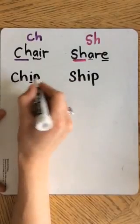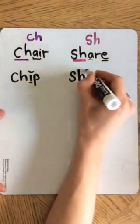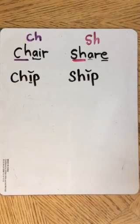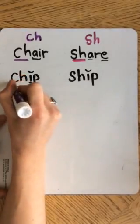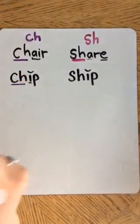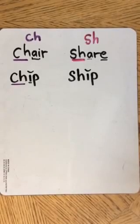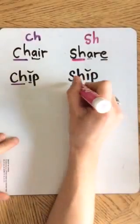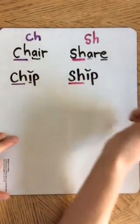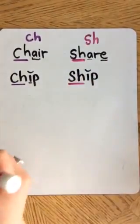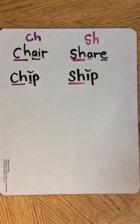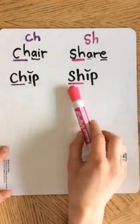Both of them have this short I, but they have a different beginning digraph. Here we have the word CHIP, like a potato chip. Maybe you like Takis better, or maybe you like chips. And here we have the word SHIP, like a pirate ship in the ocean. So we have CHIP and SHIP.